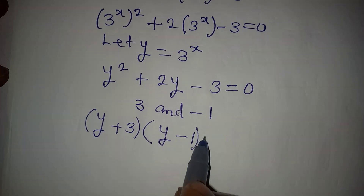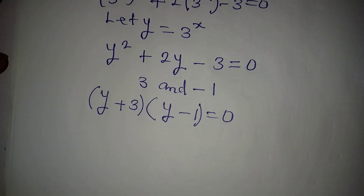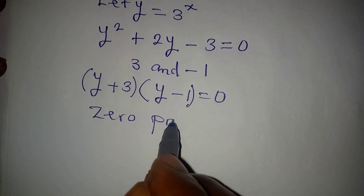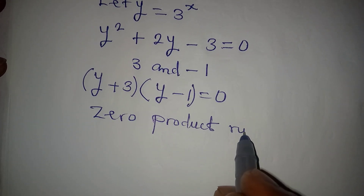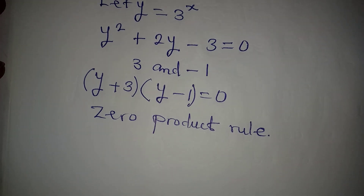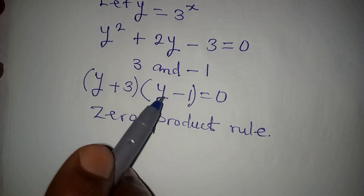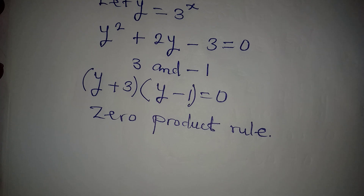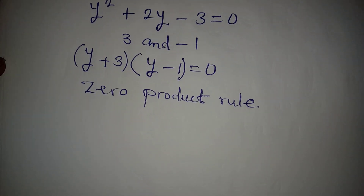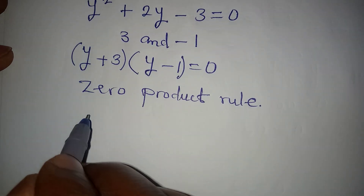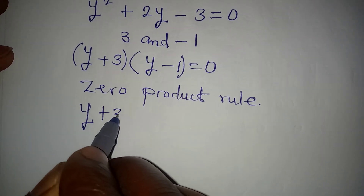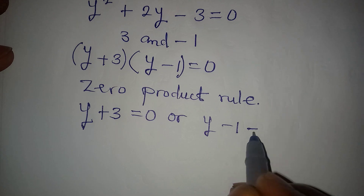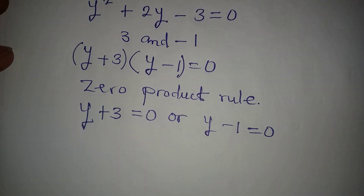The other factor is y minus 1, so we have (y + 3)(y − 1) equal to 0. Now we apply the zero product rule. The rule says if two terms multiply to give 0, then one or both of them must equal 0. So we have y plus 3 equal to 0, or y minus 1 equal to 0.